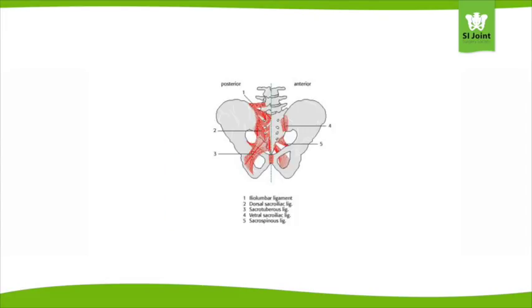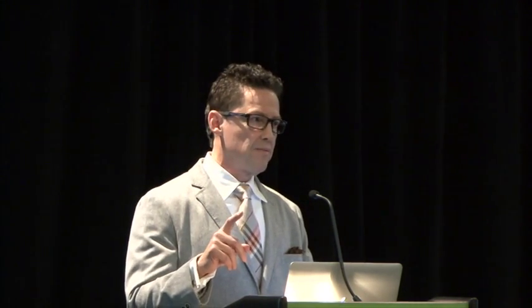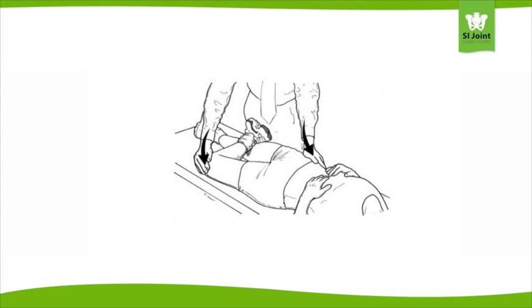Once the patient, upon being asked where their pain is emanating from, points immediately medial and inferior to the PSIS, you can take it to the bank. Radiographically, the Fortin finger test overlies the joint. I like to combine it with Patrick's maneuver. Place the patient in this position, ask them to close their eyes and take a mental image of where the pain is emanating from. And then, once they have the image, ask them to turn on their side and point to where the pain is coming from — again, medial and inferior to the PSIS.